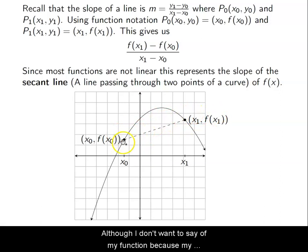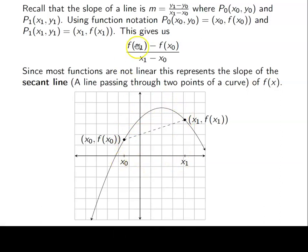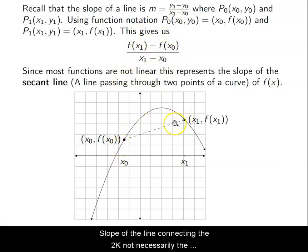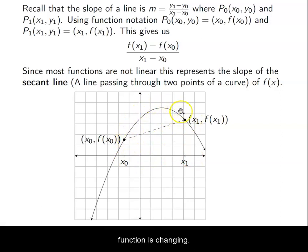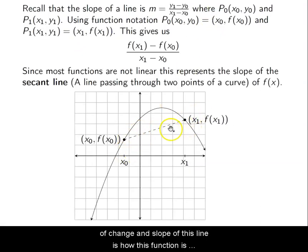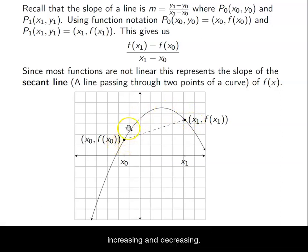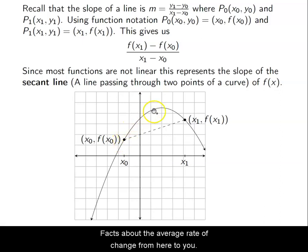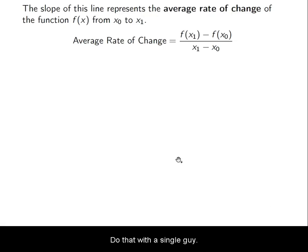Although I don't want to say the rate of change of my function, because my function is changing a lot — here it's going up and here it's going down. It's increasing and decreasing over this interval. So remember, this is just going to give me a single value — the slope of the line connecting the two points. Not necessarily the rate of change of my function the entire way because it changes in all different kinds of ways. That's really the focus of calculus one. So right now we're just going to stick to what we're calling the average rate of change. The slope of this line is how this function is changing on average from x0 to x1.